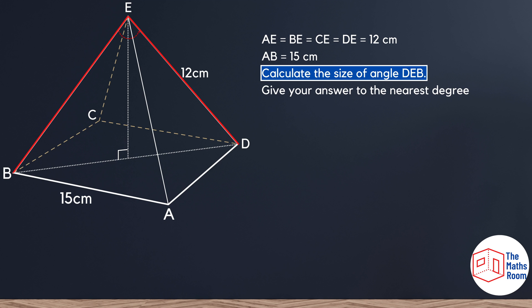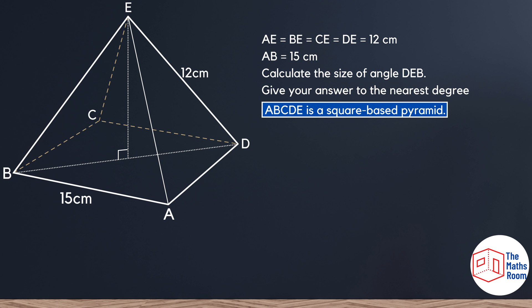If we look at that angle by itself, there is nothing linking directly to it. AB is 15 centimeters, but that doesn't really help us. However, the last piece of information is a great starting point. They say ABCDE is a square-based pyramid, which means not only is AB equal to 15 centimeters, but AD is also equal to 15 centimeters. At the same time, the angle at A is 90 degrees.